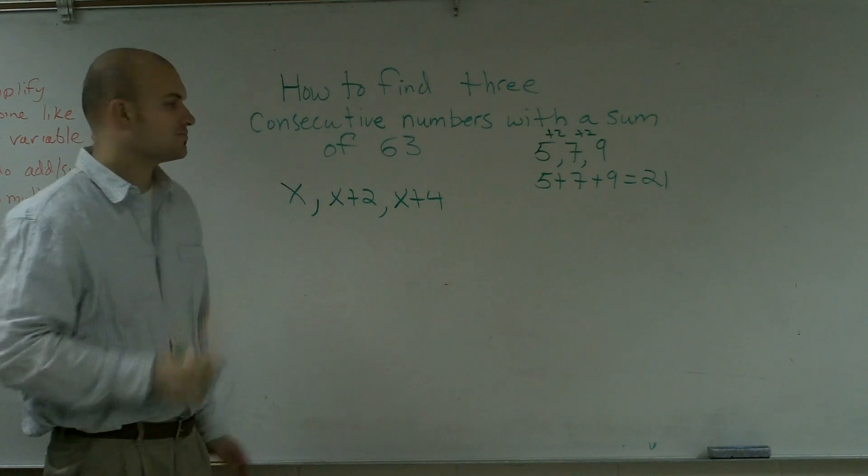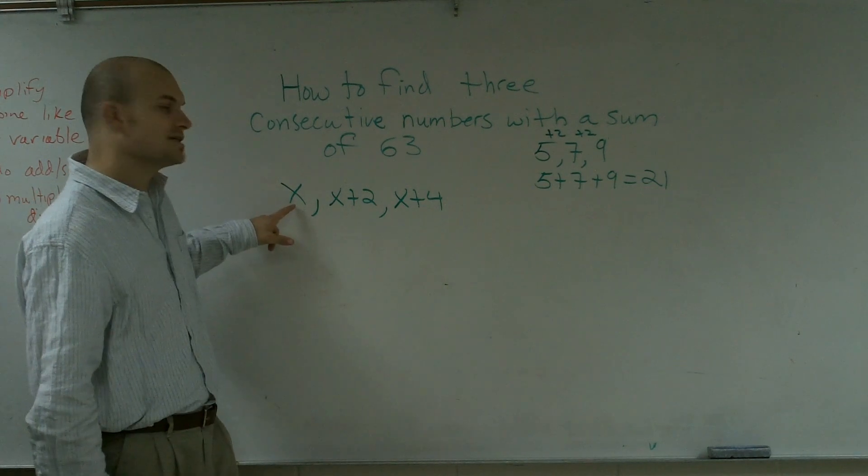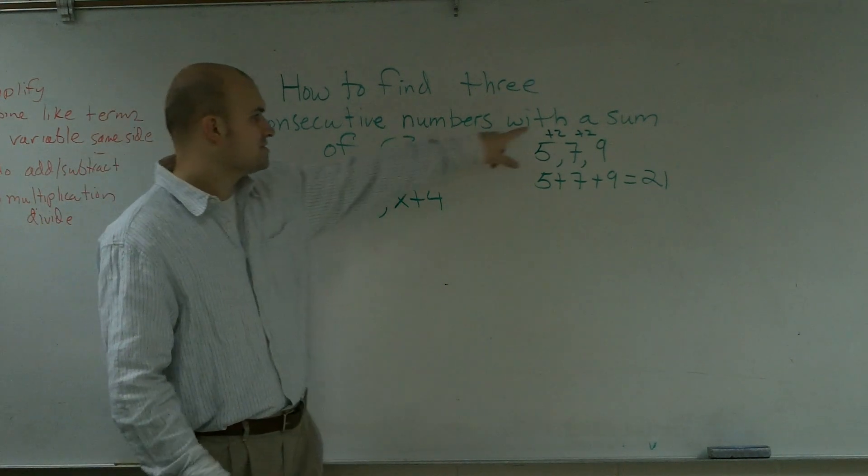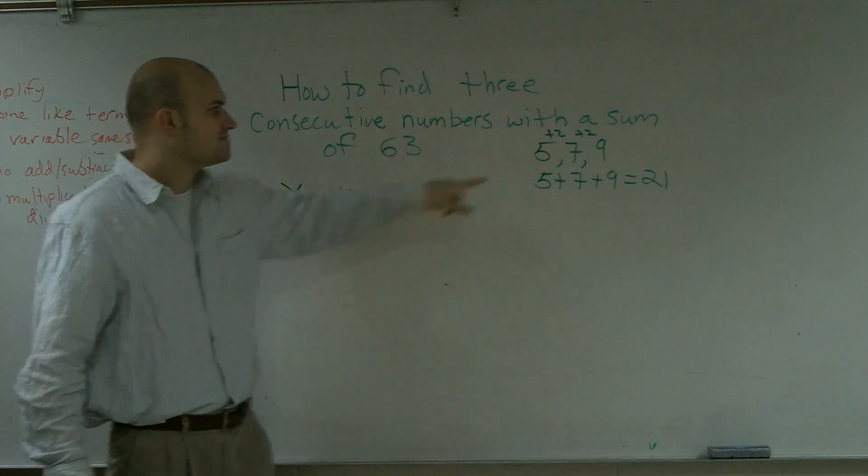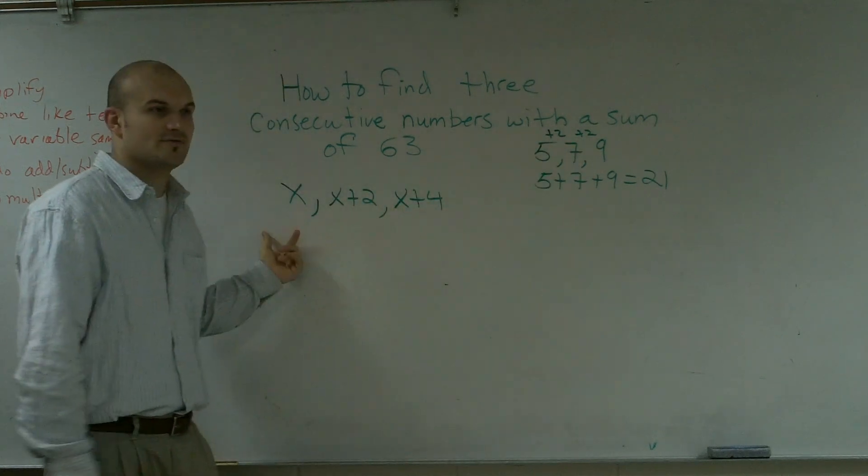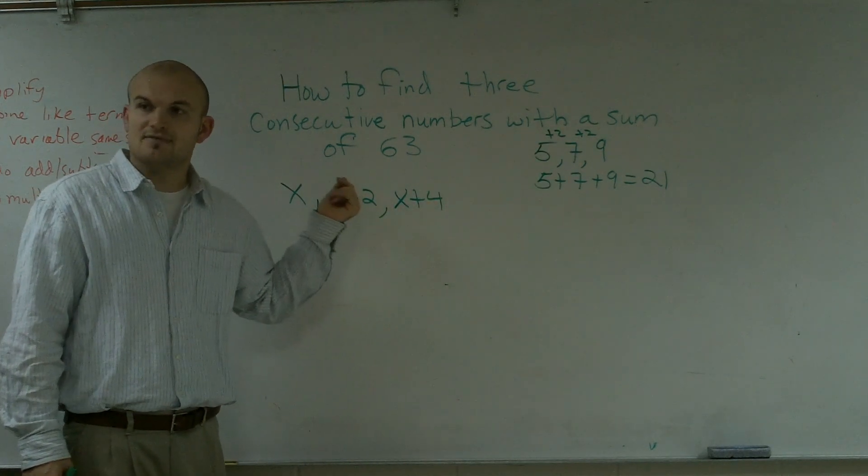And let's just double check to make sure this sounds correct. So let's say x equals 5. 5 plus 2 is 7, 5 plus 4 is 9. So this is the correct formula for three consecutive odd numbers.